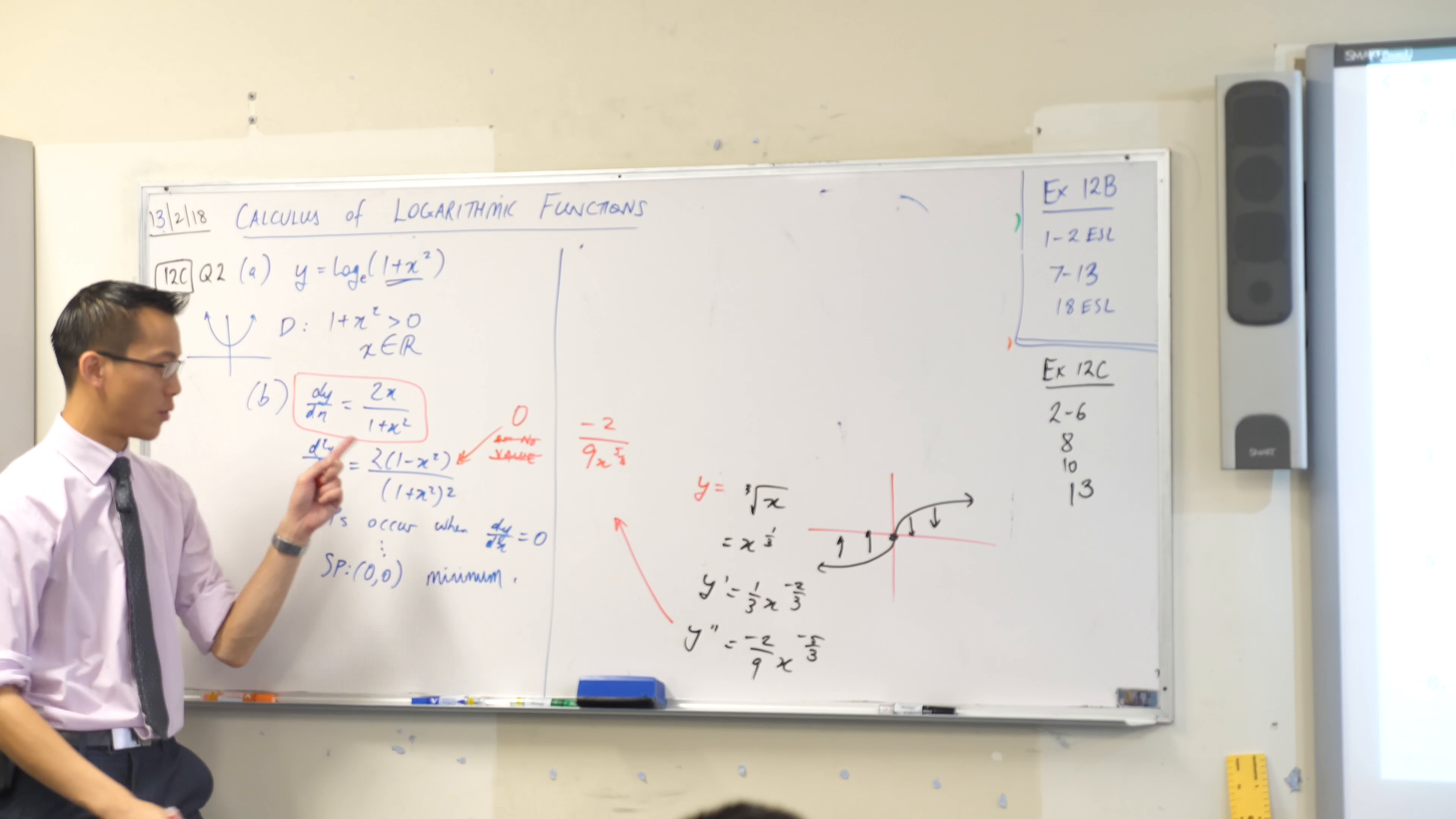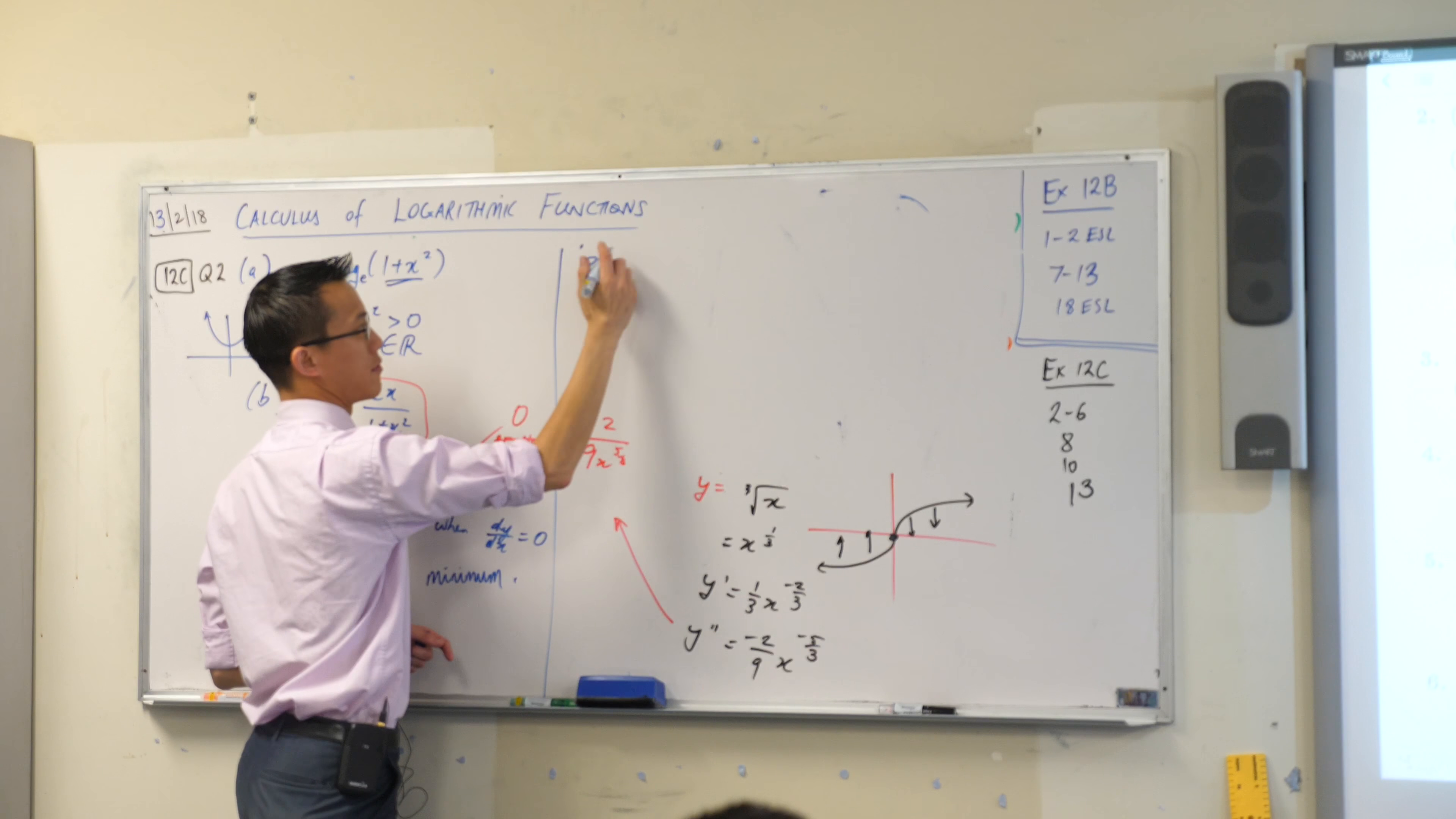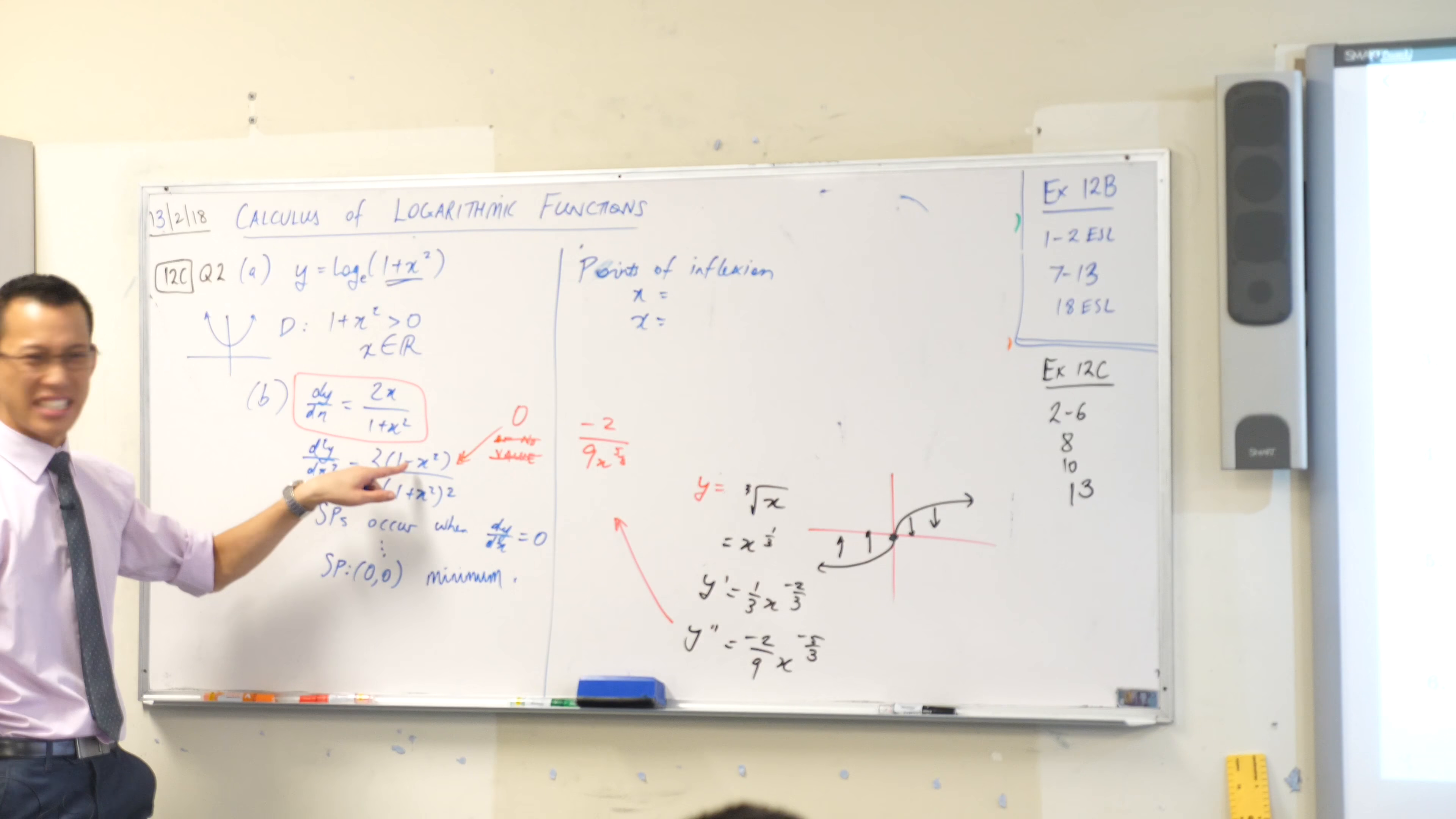But there are two spots when it's zero. What are they? You can see it from here, can't you? Have a look. Where's my blue going? You're going to get your points of inflection. No, that's fine. At x equals what and what? 1 and negative 1, because that's a difference of squares in there.